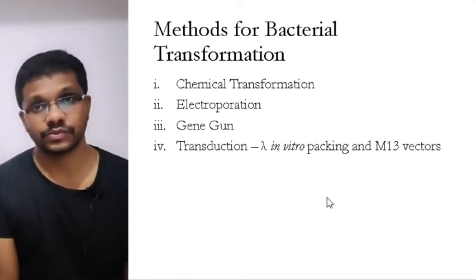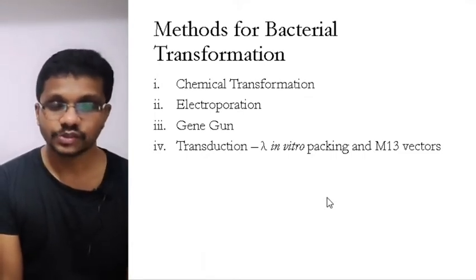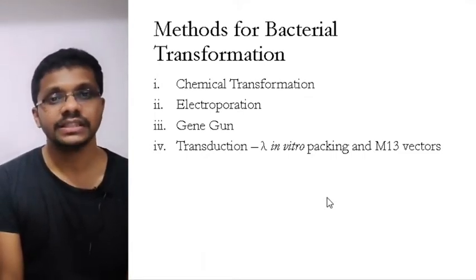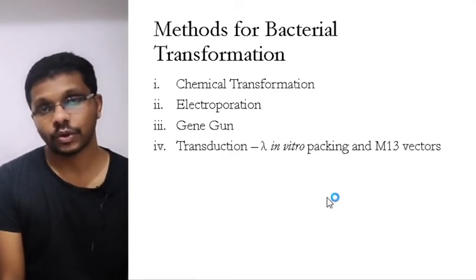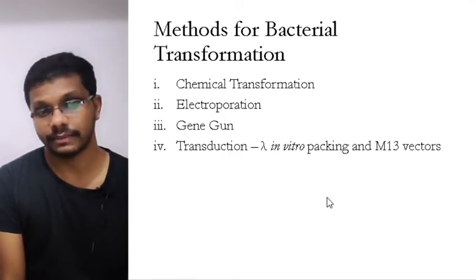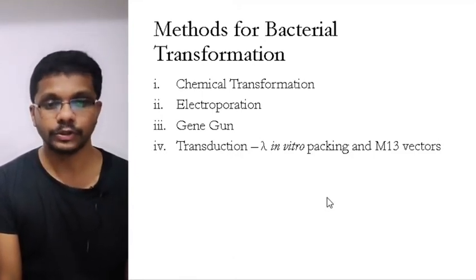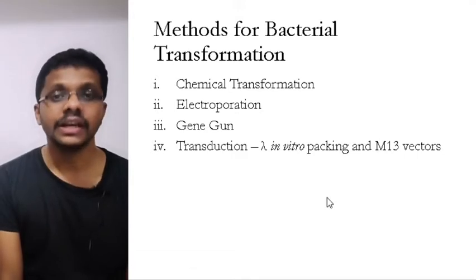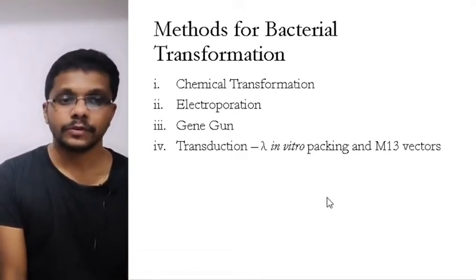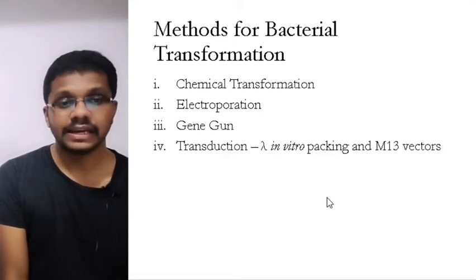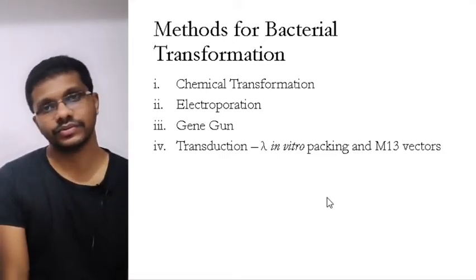Methods used for transforming bacteria are basically four different types: chemical transformation, electroporation, gene gun, and transduction. Transduction we have already talked about — we can either use lambda in vitro packaging or M13 vectors. So I am not going to discuss transduction in detail; in this session I am going to talk about the other three methods. Chemical transformation is a chemical method, while electroporation and gene gun are physical methods of gene transfer.